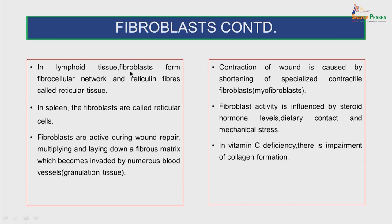In lymphoid tissue, the fibroblasts form a fibrocellular network and reticular fibers called reticular tissue. In the spleen, the fibroblasts are called reticular cells. The fibroblasts are active during wound repair, multiplying and laying down a fibrous matrix which becomes invaded by numerous blood vessels. The contraction of a wound is caused by shortening of specialized contractile fibroblasts called myofibroblasts. Fibroblast activity is influenced by steroid hormone levels, dietary contact and mechanical stress. In vitamin C deficiency there is impairment of collagen formation.